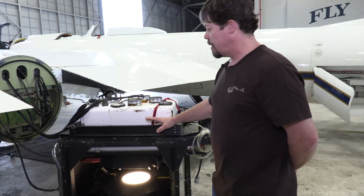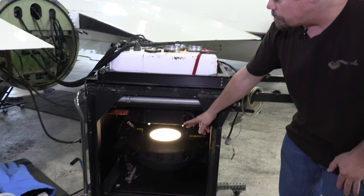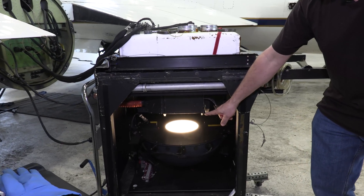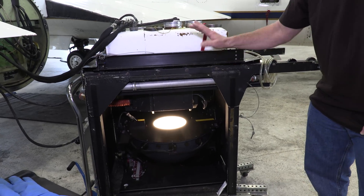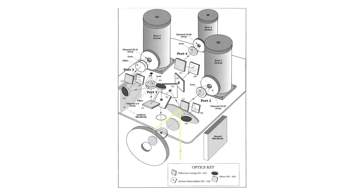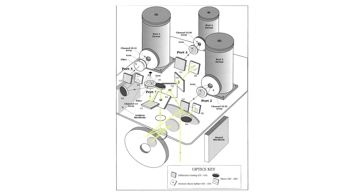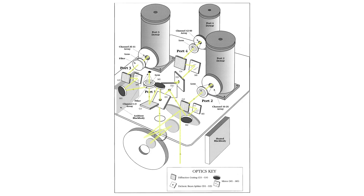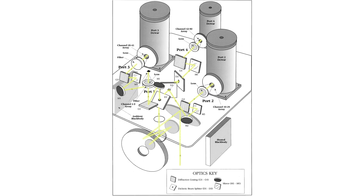Here we have the master instrument, the MODIS Airborne Simulator. We have a spinning mirror down here that's allowing light to be collected and folded up into the system, where it passes through beam-splitting dichroics, folding mirrors, and gets passed into different detector arrays within the spectrometer that collects the visible through the thermal infrared.